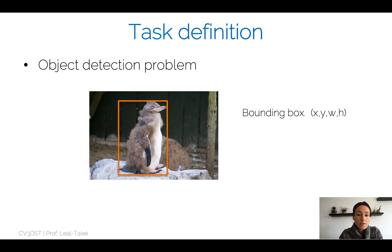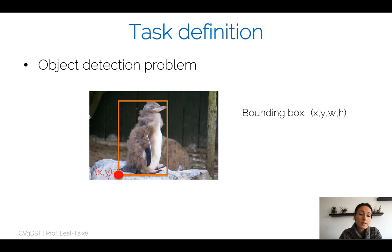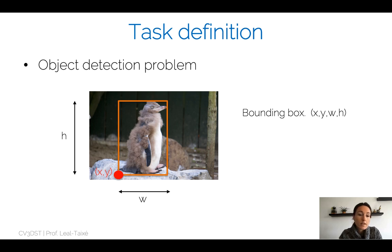The representation for our bounding box is going to be these four values. It's going to be represented by the bottom-left corner in pixel space — so x, y — and by two other values: the height and the width of the bounding box.